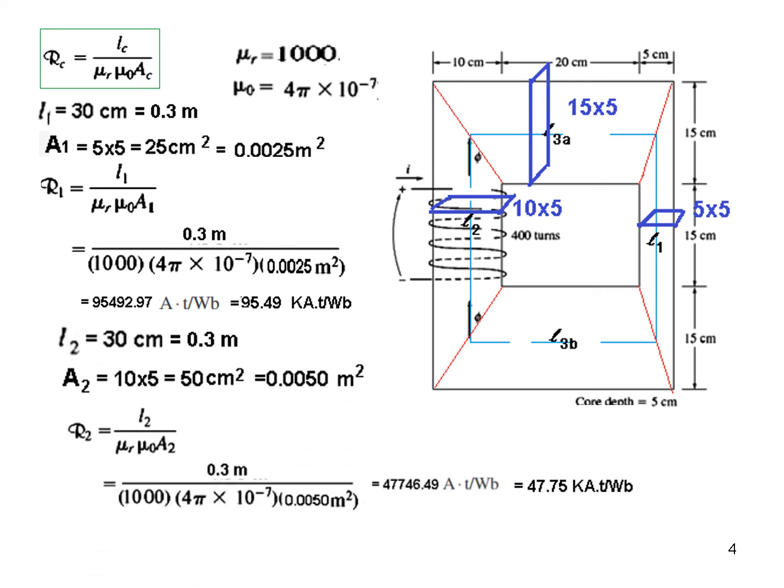Similarly R2, we had L2 was 30 centimeter become 0.3. A2 now from here you can see this is the L2 or A2 part so 10 × 5 = 50 cm² which is equal to 0.005 meter square. Plugging in the value here, this is R2.